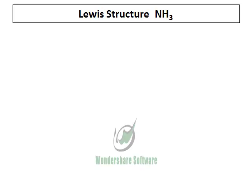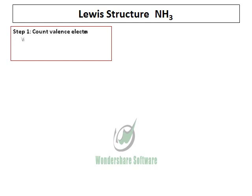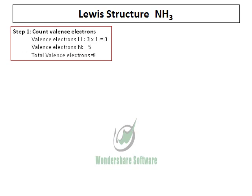We are doing the Lewis structure of ammonia. In order to do the Lewis structure, the first thing we do is count the valence electrons. Nitrogen, belonging to group 5, has 5 valence electrons. Hydrogen belongs to group 1, it has 1 valence electron. So the total number of valence electrons will be 3 plus 5, that's equal to 8.